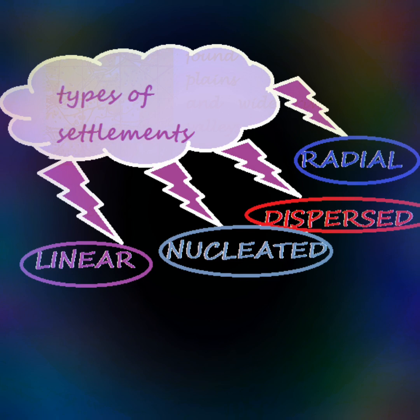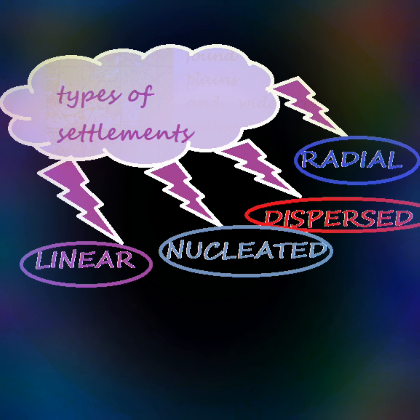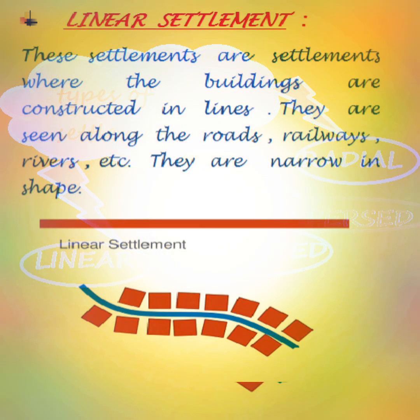There are four patterns of settlements: linear settlements, nucleated settlements, dispersed settlements, and radial settlements. Now we shall discuss each of these in detail.